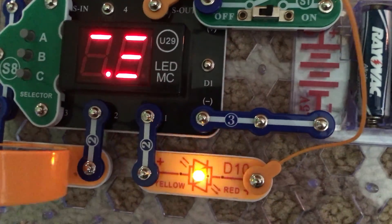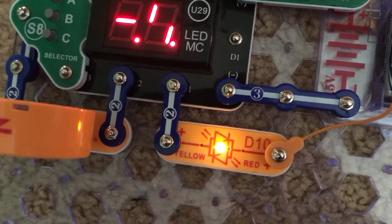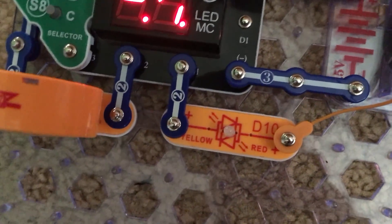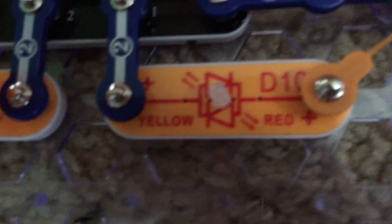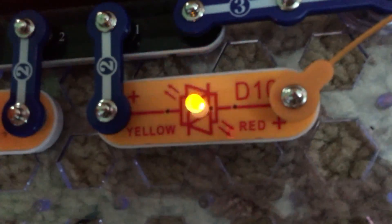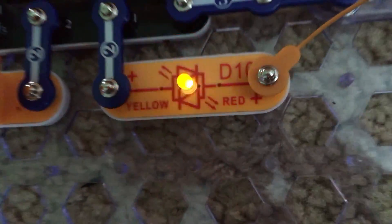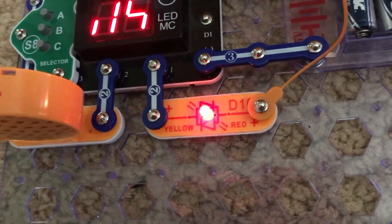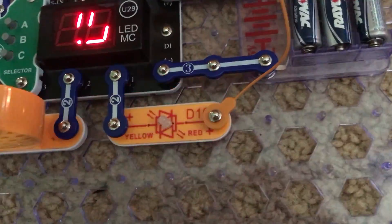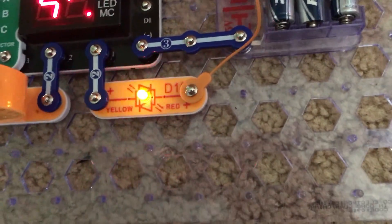Sometimes I may have mentioned this in at least one other project involving the bicolor LED, but when the colors are changing real quickly they may appear to blend into orange. My camera doesn't seem to pick that up, but you may notice that with your eyes.